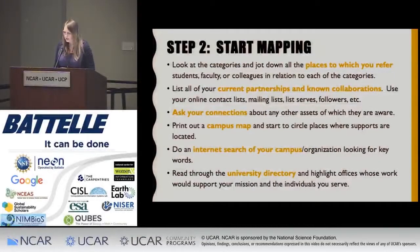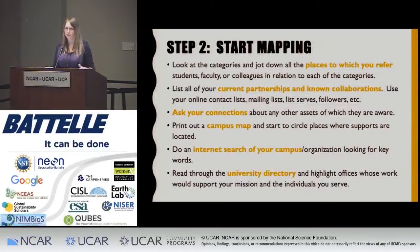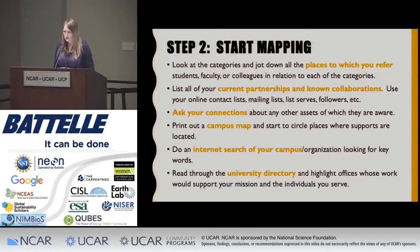The second step in asset mapping is to start mapping. We try to give people tips on how to think broadly about their institution and community. First, jot down the places where you refer students, faculty, or colleagues. Think about your known collaborations and partnerships, then ask those people who else is doing this kind of work and building these kinds of supports. Printing out a campus map to identify organizations with a similar mission, internet searches, and looking at university directories are all ways to start identifying assets.